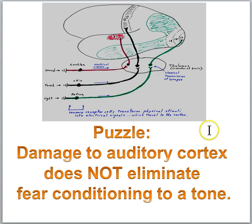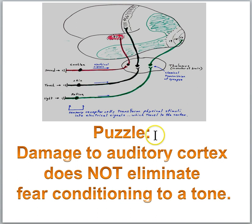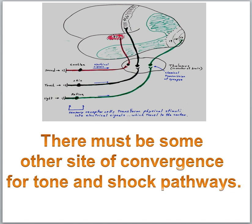Now there's a puzzle. When researchers were trying to identify the location of the fear conditioning memory trace, some early experiments involved damaging the auditory cortex. You might think that would prevent fear conditioning because if the animal can't hear the tone, how can it associate a tone with the shock? Well, damage to the auditory cortex does not eliminate fear conditioning to a tone. The animal can be trained to fear a tone even though its auditory cortex is damaged. This suggested there must be some other site of convergence for the tone and shock pathways besides the cortex.